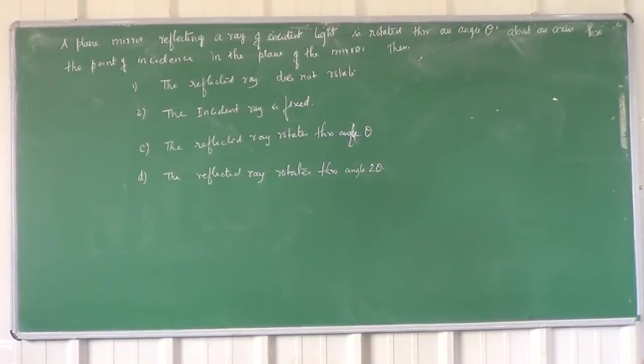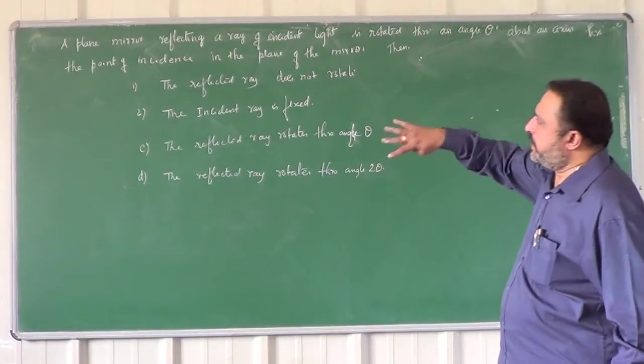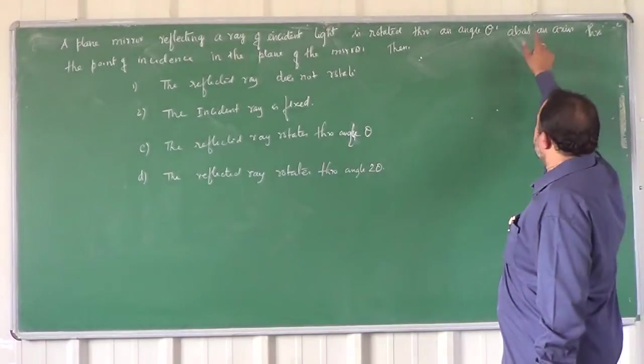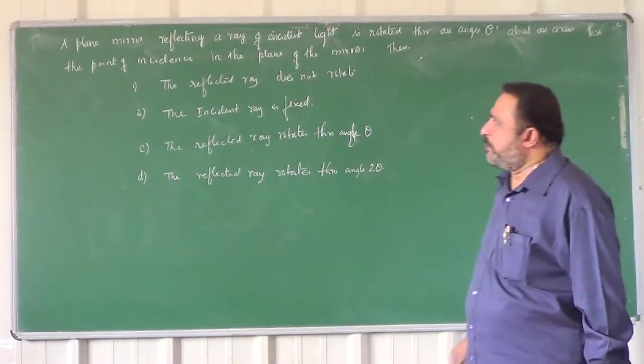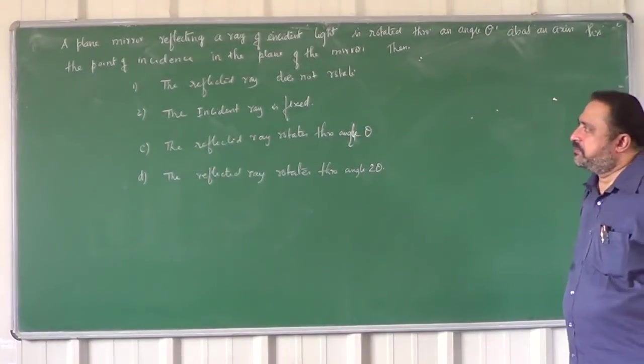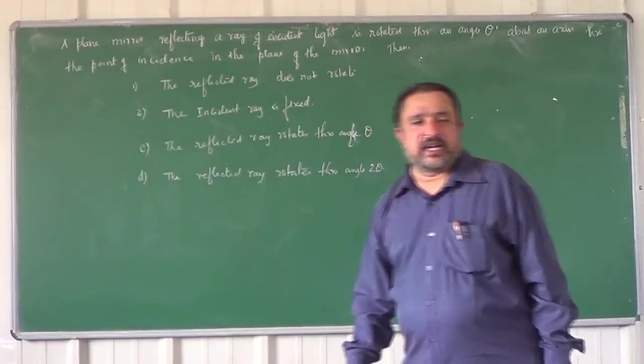Let us know what is this problem. A plane mirror reflecting a ray of incident light is rotated to an angle theta about an axis to a point of incidence in the plane of the mirror. Then which one of the options is correct?